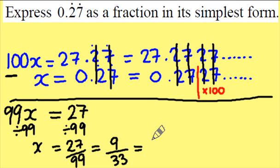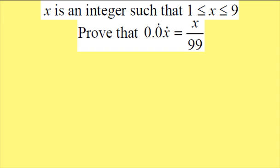So my final answer is 3 out of 11 in its simplest form. x is an integer such that it's between 1 and 9. And I need to prove that 0.0x recurring is x over 99. This time I'm not going to use x, I'm going to use y.